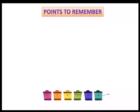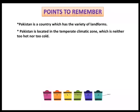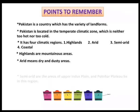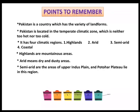Let's now revise the important points of the lesson. Pakistan is a country which has a variety of landforms and is located in the temperate climatic zone, which is neither too hot nor too cold. It has four climatic regions: highlands, arid, semi-arid, and coastal. Highlands are mountainous areas; arid means dry and dusty areas; semi-arid areas include the upper Indus plain and Potohar Plateau; and the long coastline of Pakistan is in the south.